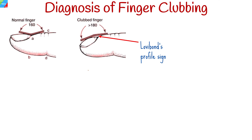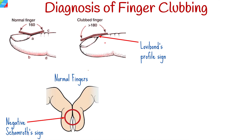Two signs can be used to make the diagnosis of finger clubbing. The first sign is known as Lovibond's profile sign. Normally the nail bed and the cuticle form a sharp angle. The natural angle is lost when clubbing occurs because the nail angles down instead of up.